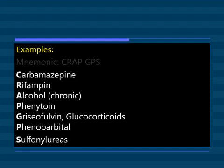This process is called enzyme induction and the drugs are called enzyme inducers. A useful mnemonic to memorize them is CRAP GPS: Carbamazepine, Rifampin, Alcohol, Phenytoin, Griseofulvin, Glucocorticoids, Phenobarbital, and Sulfonylureas.